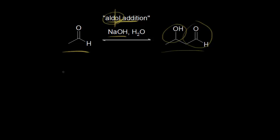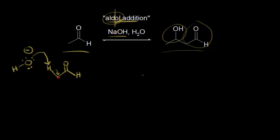Let's look at the mechanism for the formation of this. Starting with acetaldehyde, we look for our alpha carbon — it's the one right next to our carbonyl, so here is our alpha carbon. There are three alpha protons on that alpha carbon; I'm just going to show one here, and then sodium hydroxide comes along and acts as a base. So we have the hydroxide anion with a negative one formal charge on the oxygen, and it's going to take this proton, leaving these electrons behind on our alpha carbon.